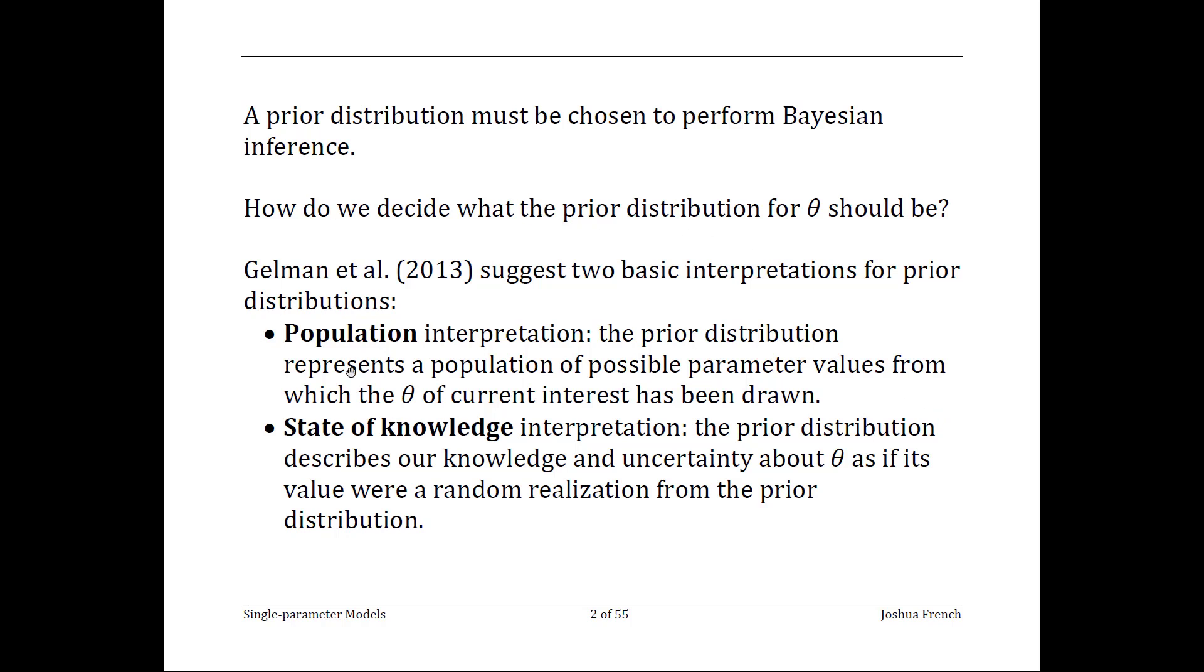First, for the population interpretation, our parameter values come from a population. In other words, there really is a distribution producing the values of our parameter. For example, a physical process may produce values of the parameter.